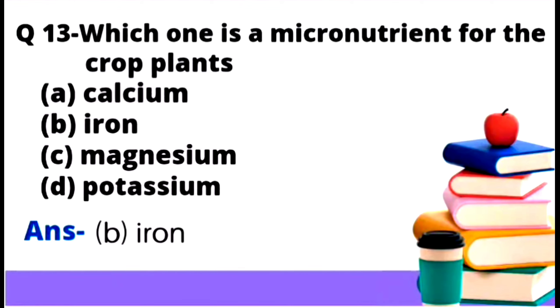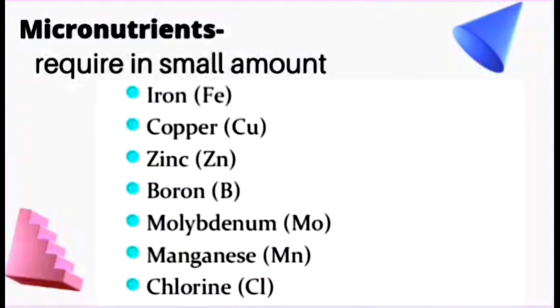Question number 13: Which one is a micronutrient for crop plants? Option A calcium, option B iron, option C magnesium, option D potassium. Now we will see what are micronutrients and macronutrients. First we will see the right answer, option number B, that is iron.